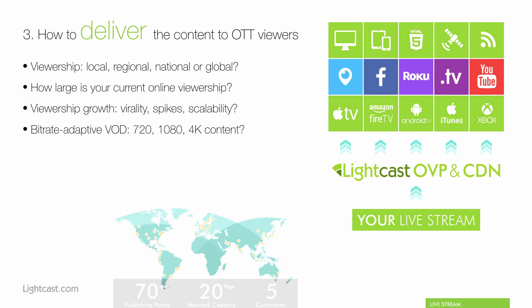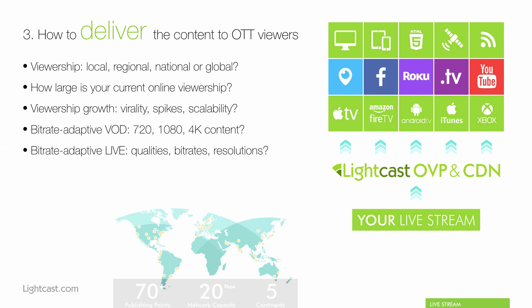Make sure to deliver everything bitrate adaptively, especially for on-demand video. Are you uploading 720p, 1080p, 4K, or 7K content? Same with live streams — what qualities, bitrates, and resolutions are you intending to stream? Make sure your CDN can accommodate all your needs and deliver it bitrate adaptively. The Lightcast tip: use a global bitrate-adaptive CDN with at least 50 POPs or data centers worldwide. The Lightcast CDN leverages the largest CDNs on the planet in a multi-CDN setup, using over 110 data centers with over 250,000 streaming servers collectively for clients simultaneously.